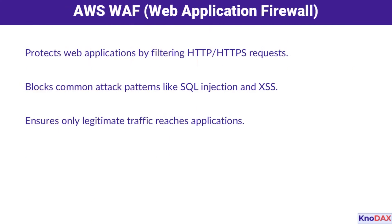For application-level security, AWS WAF is your go-to tool. It protects web applications by filtering HTTP and HTTPS requests, blocking threats like SQL injection or cross-site scripting attacks. By ensuring only legitimate traffic reaches your applications, WAF helps safeguard your web assets.